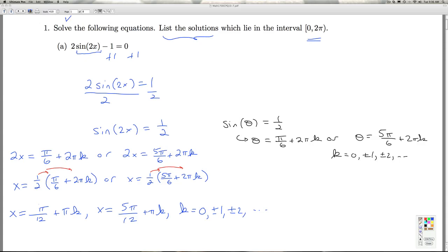Since we've got π/12s here, it's convenient for us to think of 0 as 0π/12. And 2π, well, that's 24π/12.